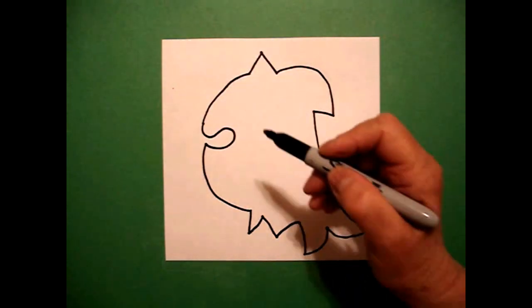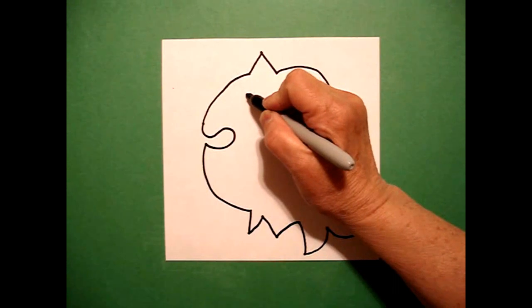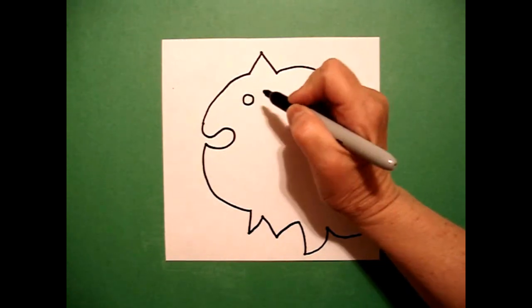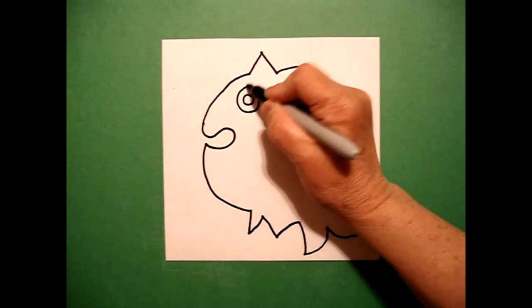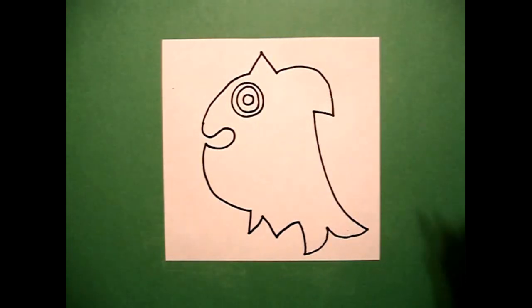But now we're going to start adding the details. Right here, I draw one baby circle and then I draw another circle around it and another circle around it.